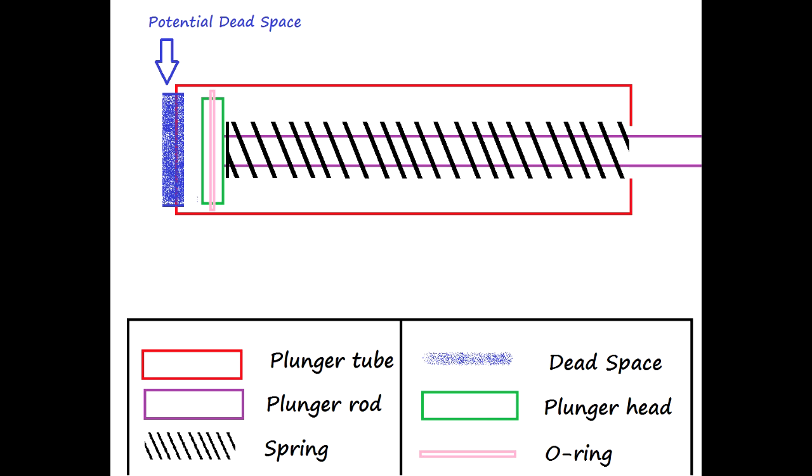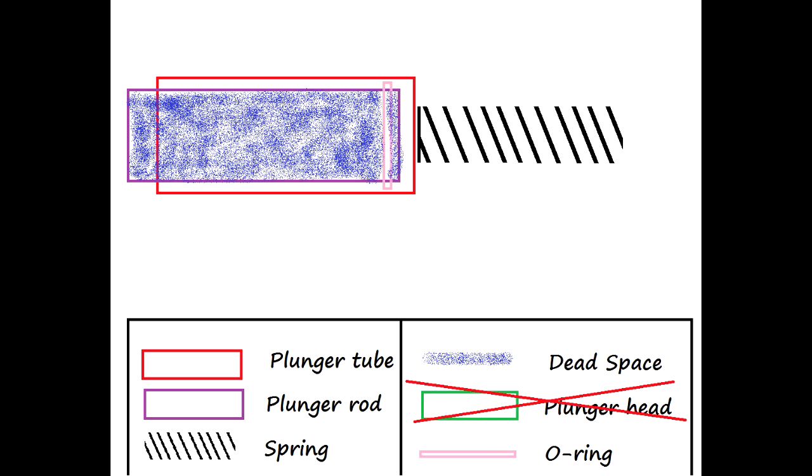The air pressure isn't as high compared to a direct plunger tube system using the same spring and plunger tube volume. This means that you either have to increase the spring or plunger tube volume in order to compensate for the inefficiency of this system.